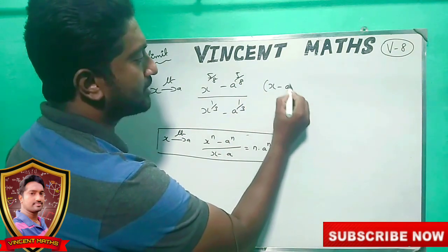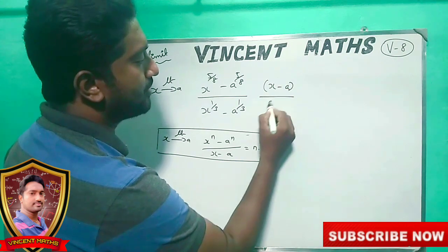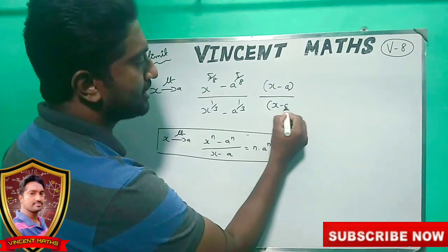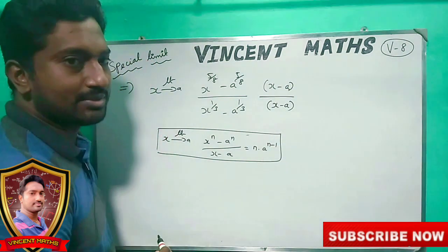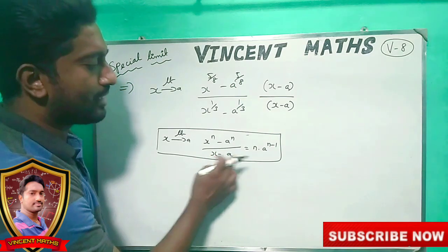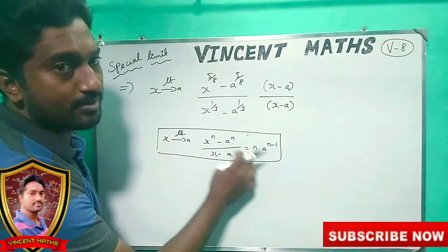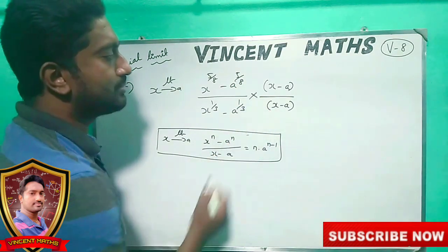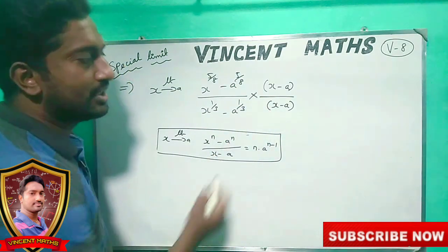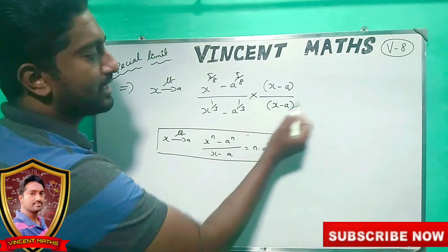x minus a divided by x minus a — all. We will multiply this form. I can use this form. So, if we do this, we will cancel these values.